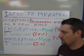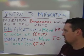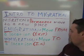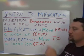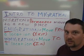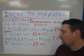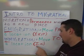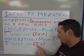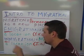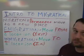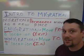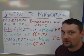The other type of migration is called immigration, and that is a move to a new location. If you want to help remember that, there's an I in immigration. So those are our two major types of migration.